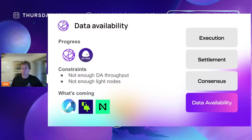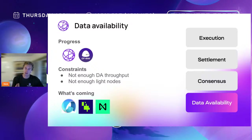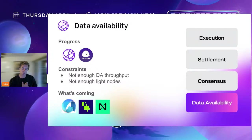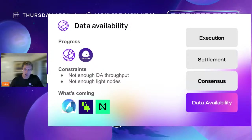The nice thing is that data availability sampling is working in practice, meaning we can now start to scale block space production more aggressively. We also have projects like Avail, EigenDA, and NEAR coming on, which will also increase DA layer throughput. We also need to roll out more light node adoption — Celestia is working on Rust clients to embed light nodes in browsers and mobile apps, so that users are running light nodes by default and we end up scaling the number of light nodes.